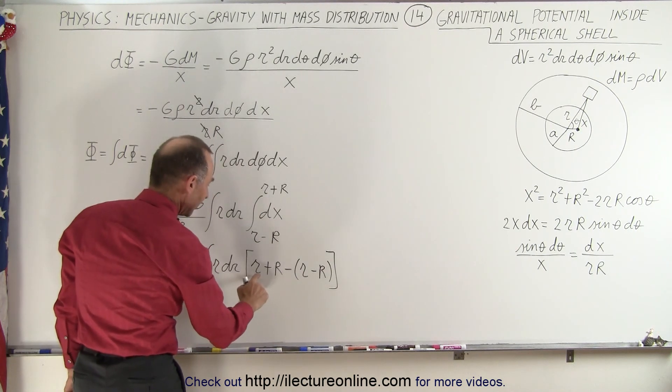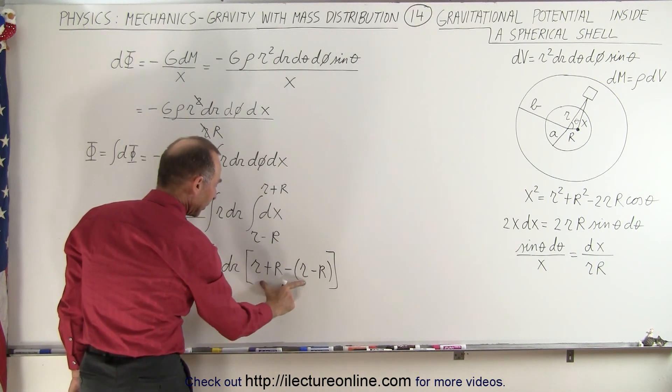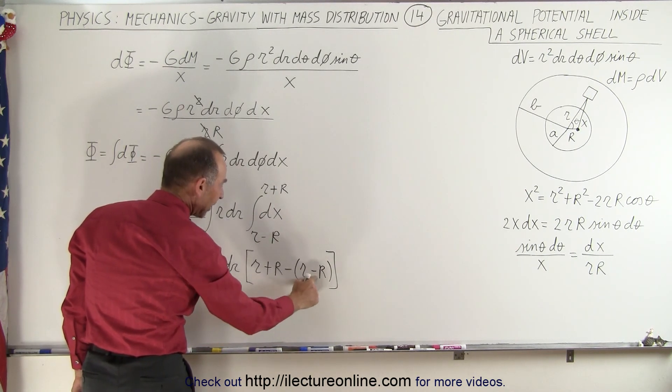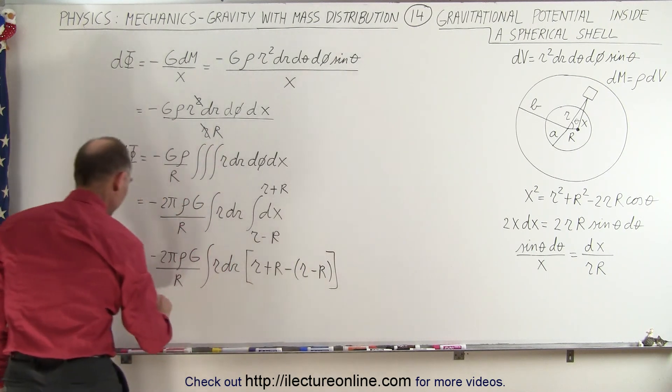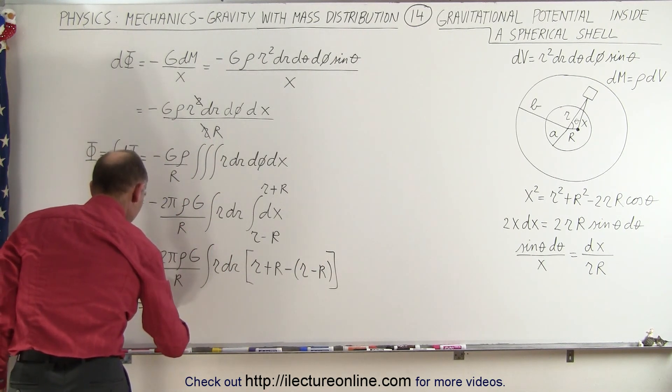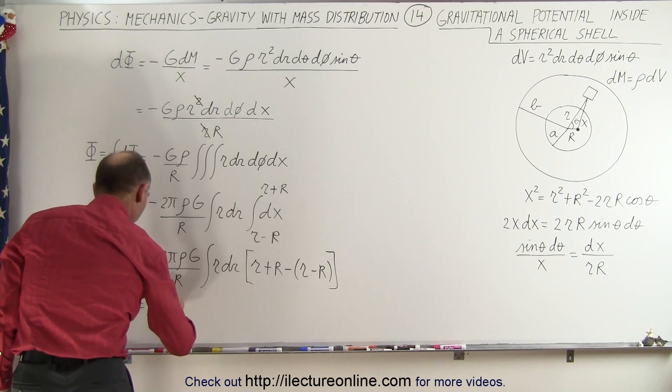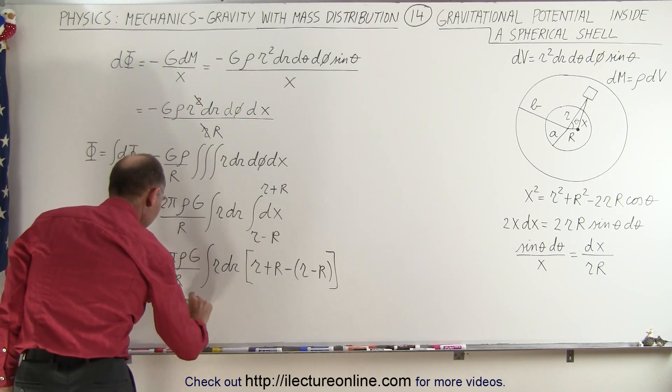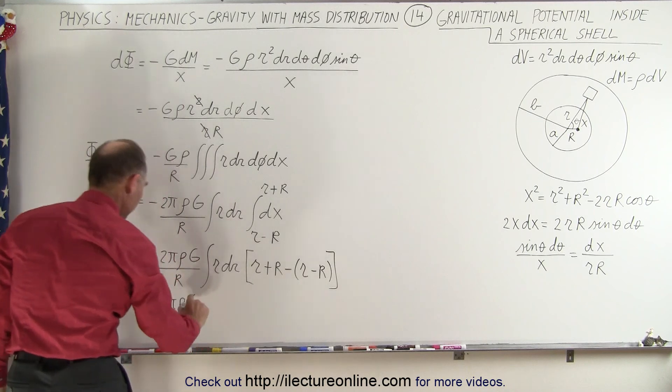Now notice that the little r's cancel out, so the variables cancel out, and r minus a negative r becomes 2R. So this is equal to minus 4 pi density g,